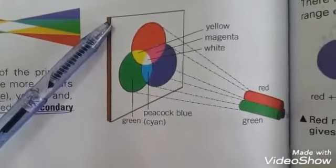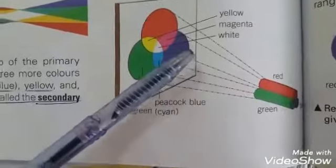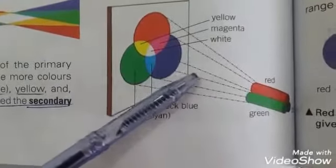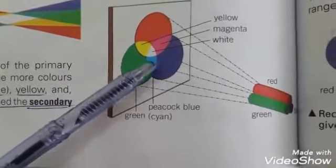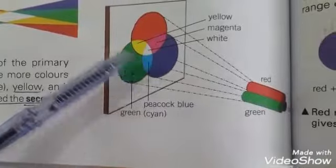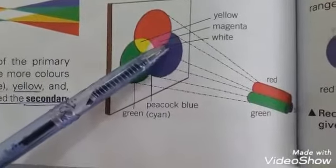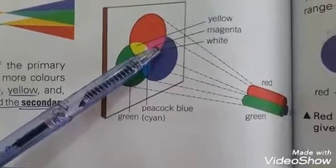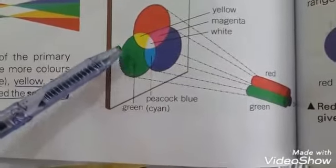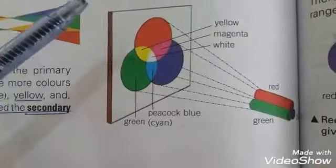From the figure: green and blue mix together to form sky blue (peacock blue). Blue and red mix together to form magenta. Red and green mix to form yellow.